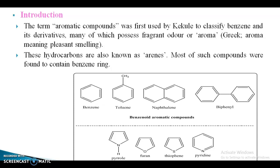The aromatic compounds which contain a benzene ring are called benzenoid aromatic compounds. For example, benzene, toluene, naphthalene, anthracene, biphenyl, and so on.